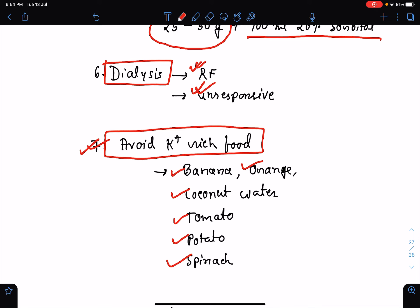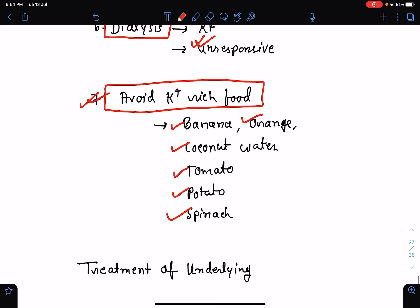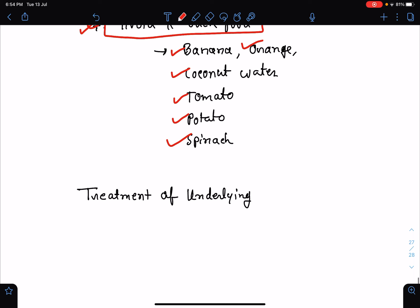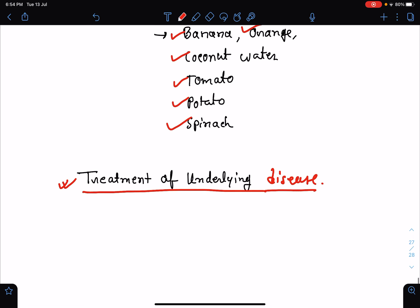So this is all about hyperkalemia which I wanted to discuss. Very importantly, treatment of underlying disease is very important. Not only the correction of potassium level but also treatment of underlying disease we need to keep in mind. Thank you so much for attending the class. I hope it helps.